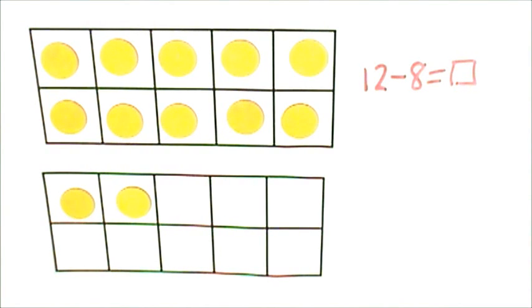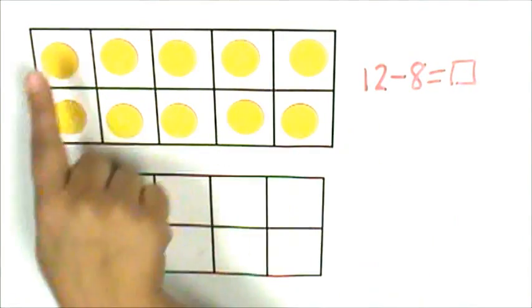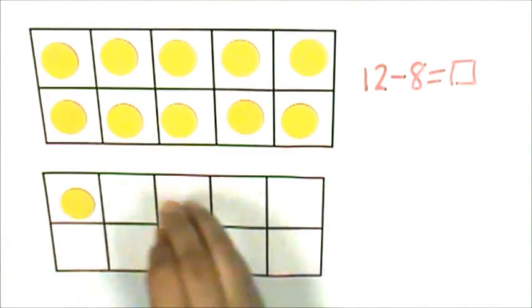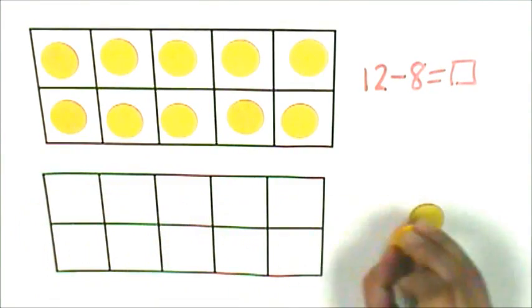Then I will take away 2 counters because I need to get to 10. This is 12. I only need 10. Here's 1, here's 2.